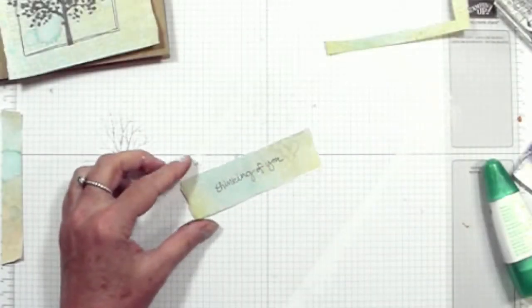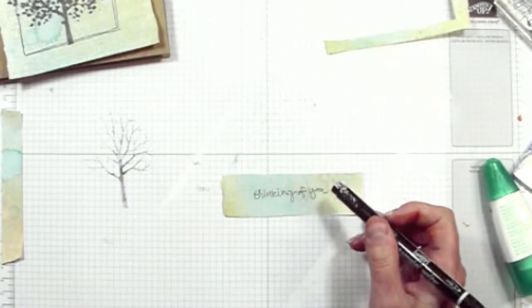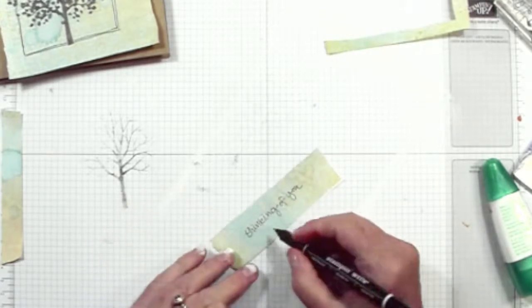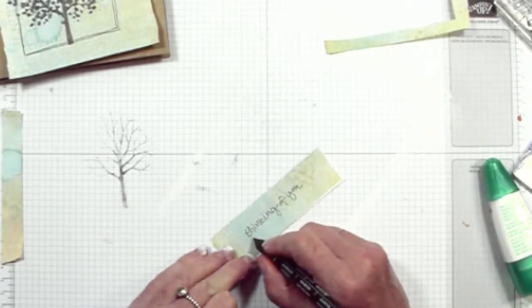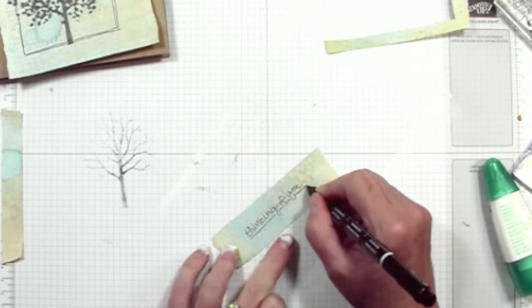And now comes the second scary bit. Again we're going to create a little border as you can see here around the greeting. Again this is just freehand drawn. And I just start at the bottom and basically draw a line around.